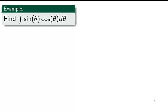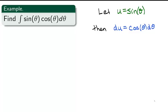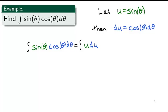Let's try another example. Find the integral of sin(θ) cos(θ) dθ. Notice here there's no clear inside or outside function, but our function can be broken into two pieces, sin(θ) and cos(θ), and cos(θ) is the derivative of sin(θ). So let u = sin(θ), then du = cos(θ) dθ. Now the integral of sin(θ) cos(θ) dθ can be rewritten as the integral of u du, by replacing sin(θ) with u and cos(θ) dθ with du.